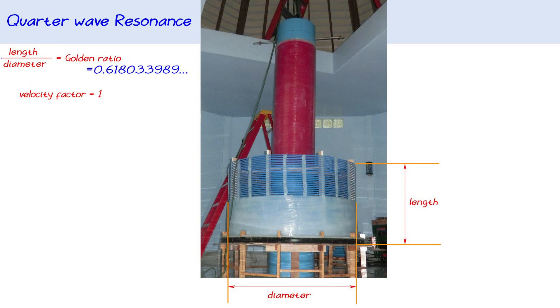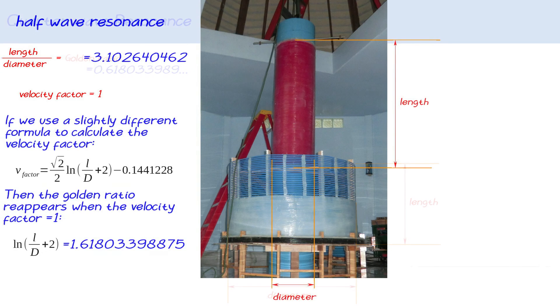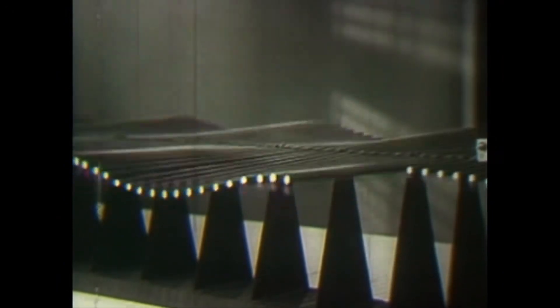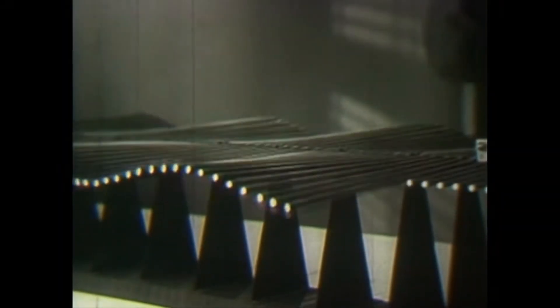Another interesting fact is that if a quarter wave coil's length over diameter equals the golden ratio, then it has a velocity factor of 1. For a half-wave resonator, this ratio will need to be about 3.11. I use this factor as an indicator of how easily an electric impulse can travel through a coil.